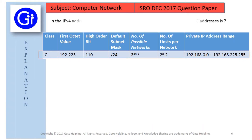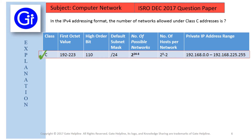We can easily verify this from the extracted table showing only class C values. Here we can also see that 2 raised to the power of 24 minus 3 gives the number of possible networks, which results in 2 raised to the power of 21 — that is the answer for this question.